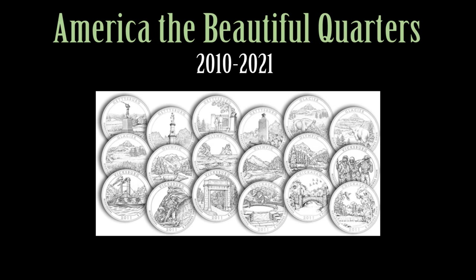After the conclusion of the state and territorial quarters in 2009, the America the Beautiful quarters began to be minted in 2010. This program features five new quarters each year until the year 2021. Each quarter will depict a national park or national site, one from each state, the federal district, and each territory.